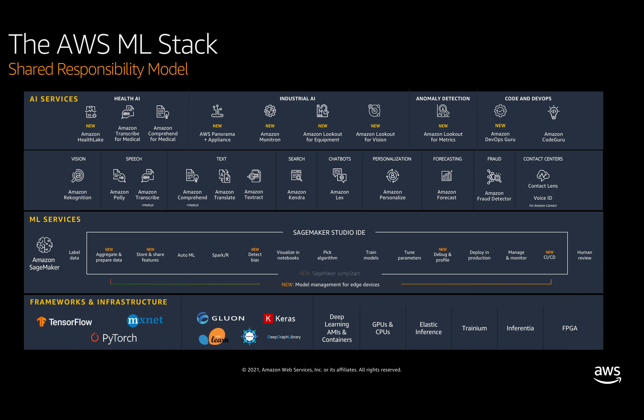You've probably seen this slide before, but this is our machine learning stack on AWS, where we have our infrastructure and frameworks layer at the bottom of the stack. As you move up the stack, we have our ML services in the middle and our AI services at the top. Each layer has different levels of managed services and features within those services. For any AWS workload, the same holds true.